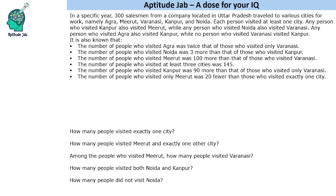In a specific year, 300 salesmen from a company located in Uttar Pradesh travelled to various cities for work. The cities are Agra, Meerut, Varanasi, Kanpur, and Noida. Each person visited at least one city. Any person who visited Kanpur also visited Meerut, while any person who visited Noida also visited Varanasi. Any person who visited Agra also visited Kanpur, while no person who visited Varanasi visited Kanpur.